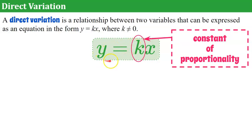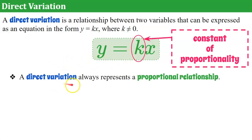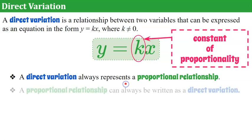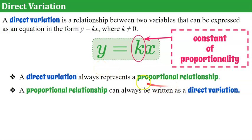Here it is: Y equals K times X — we still have our constant of proportionality. A direct variation always represents a proportional relationship. The direct variation is the equation of the line, and the line on the graph represents the proportional relationship. The proportional relationship can always be written as a direct variation. If you're given a table of values showing a proportional relationship, I'll show you today how to turn that into an equation.